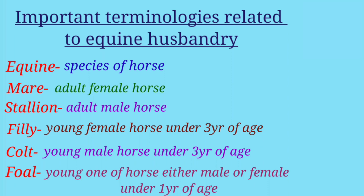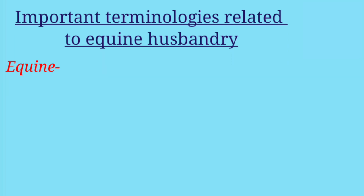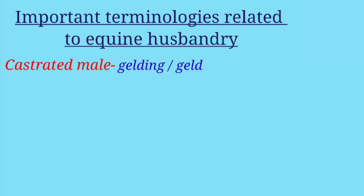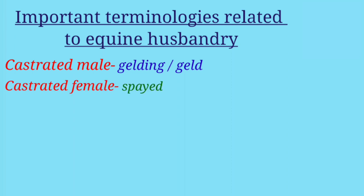'Foal' refers to the young or newly born horse, either male or female, under one year of age. A castrated male horse is known as a 'gelding,' and a castrated female is known as a 'spayed.'